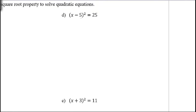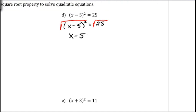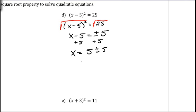In our next example, this one is a little different. We have the quantity (x - 5)² = 25. We can still unsquare this quantity by taking the square root on both sides. The square root and the square cancel each other out, leaving x - 5 = ±√25. Remember to include plus or minus. The square root of 25 is 5, so x - 5 = ±5. Adding 5 to both sides gives x = 5 ± 5. That means 5 + 5 = 10 and 5 - 5 = 0, so our two solutions are 10 and 0.